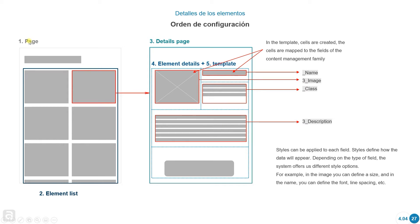We already know how to create a page, an element list, and templates. But we're going to learn a couple more steps. Once we have a page and an element list, we know we are using a template to display contents in the element list. By clicking on each template, we want the user to be redirected to a details page — jumping from one page to another. Within the details page, we need an element detail and a template.